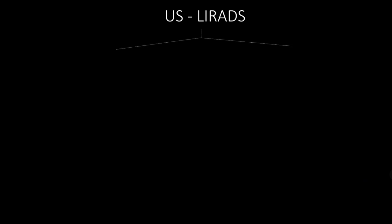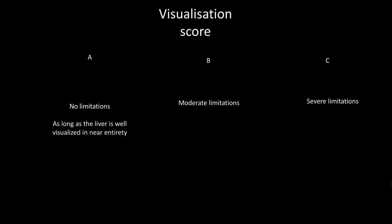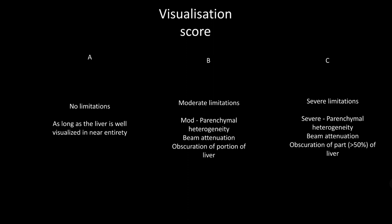The ultrasound LIRADS visualization score is divided into three scores: A, B, and C. Score A indicates no limitations, meaning the liver is well visualized in its entirety. Score B (moderate limitations) is assigned when there is moderate parenchymal echogenicity, moderate beam attenuation, or obscuration of a portion of the liver. Score C (severe limitations) applies when there is severe parenchymal echogenicity, severe beam attenuation, or obscuration of more than 50% of the liver.